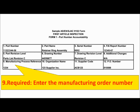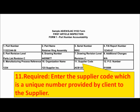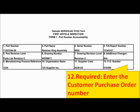Field 10 is required — please enter the name of the organization performing this first article inspection report. Field 11 is required — please enter the supplier code, which is a unique number provided by the client to the supplier. Field 12 is required — please enter the customer purchase order number.